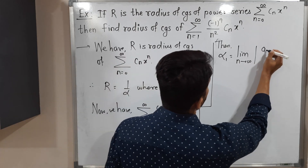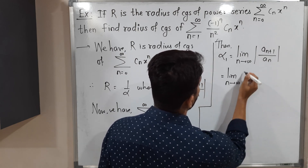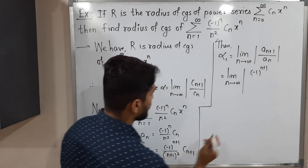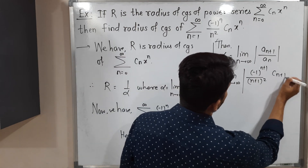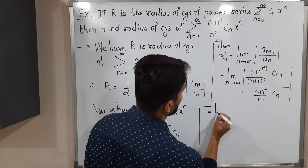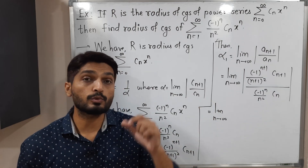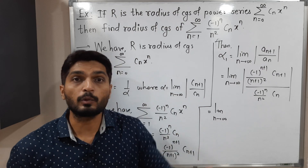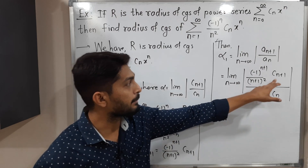So α₁ = limit as n tends to infinity of |aₙ₊₁ / aₙ|. Substituting: aₙ₊₁ is (-1)^(n+1) / (n+1)² · cₙ₊₁, divided by aₙ which is (-1)ⁿ / n² · cₙ. Because of the absolute value, (-1) raised to any power becomes 1, so we only need to track cₙ₊₁, cₙ, n², and (n+1)².